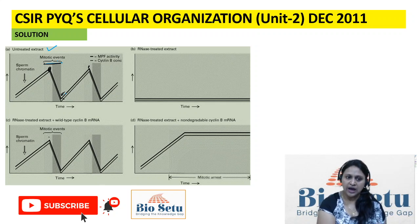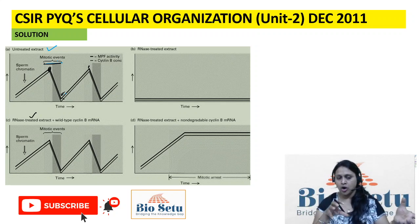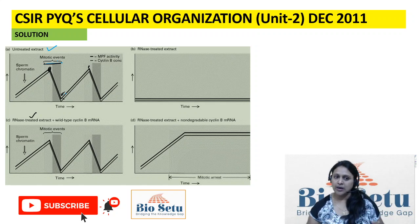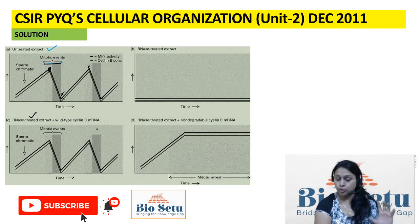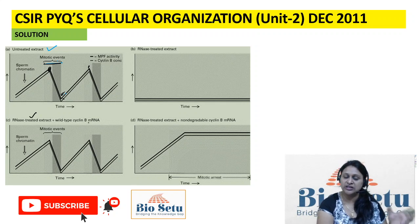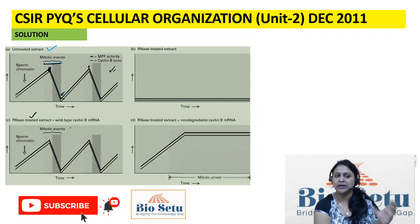The third condition: RNA-treated extract — egg is treated — and wild-type Cyclin B mRNA is also added; sperm chromatin is wild type. Again, this will be normal. Why? Because one RNA is treated but the other is wild type — the other wild type is giving Cyclin B production and degradation, production and degradation. So normal activity results, just as in condition one, because one source is giving normal Cyclin B which can be regulated.